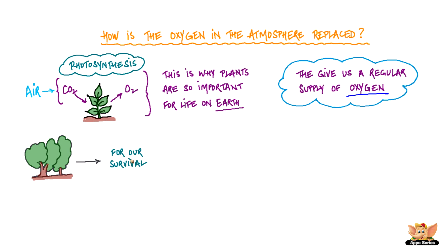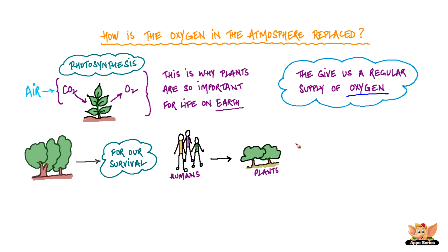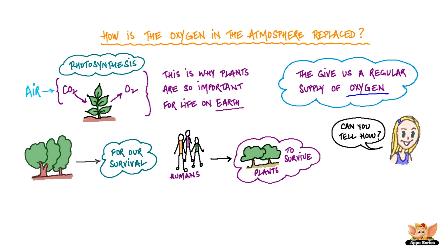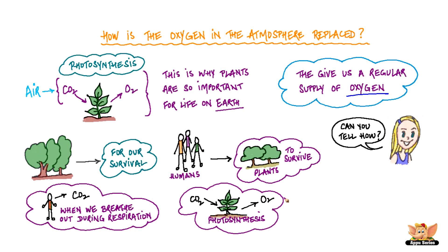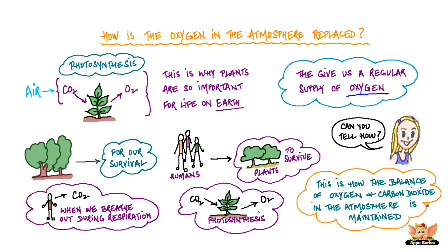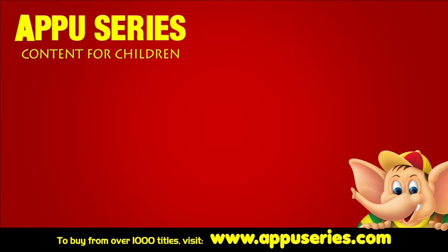And just as plants are important for our survival, humans are important for plants to survive. Can you tell how? We humans give out carbon dioxide when we breathe out during the process of respiration, and plants use this carbon dioxide for photosynthesis. This is how the balance of oxygen and carbon dioxide in the atmosphere is maintained.